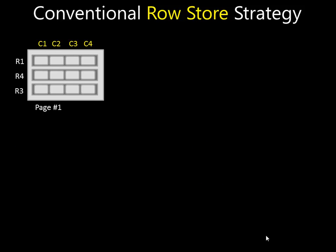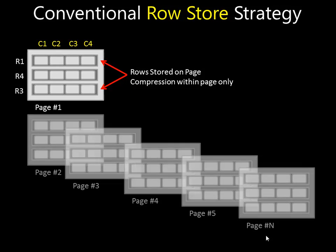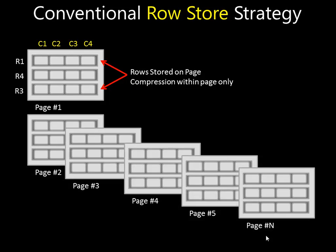Let's look at the differences between the X-Velocity column store and the traditional row store that we are used to. In a conventional row store strategy, pages are stored on disk with sets of rows. So in this example, we might have three different rows stored in a page, and these three rows each have four columns. We can compress data on these pages, but the amount we can pack into each page is limited by the compressibility of the entire row.